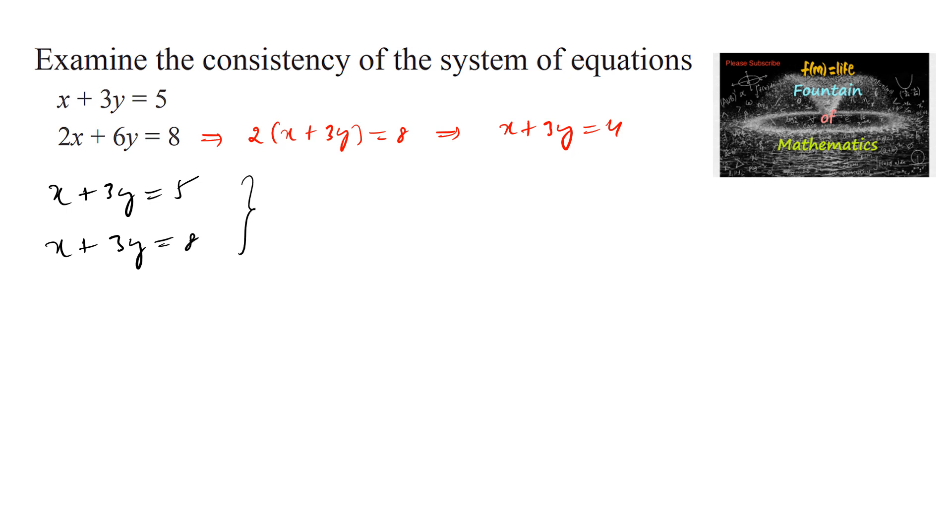The given equations we can represent in matrix form as 1, 3, 1, 3 into x and y variables equals 5 and 8. We can see that the first row and second row are both identical, and hence the determinant of A equals 0.